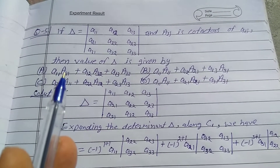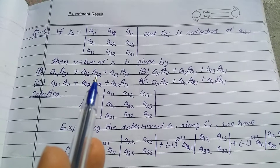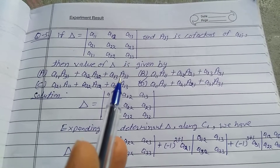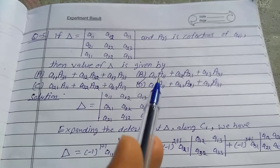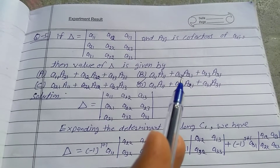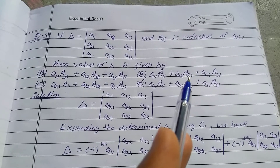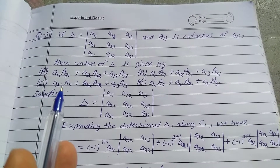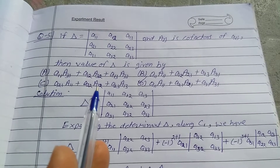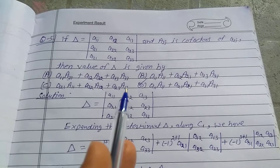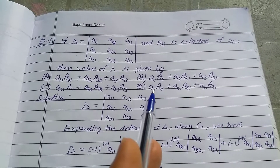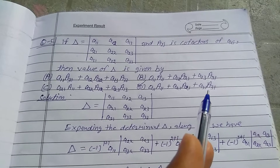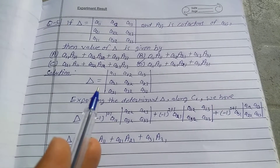Option A: a11·A31 + a12·A32 + a13·A33. Option B: a11·A11 + a12·A21 + a13·A31. Option C: a21·A11 + a22·A12 + a23·A13. Option D: a11·A11 + a21·A21 + a31·A31. Solution: take delta equal to the determinant with elements a11, a12, a13, a21, a22, a23, a31, a32, a33.